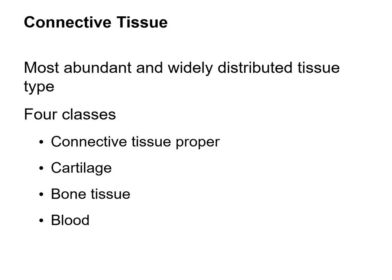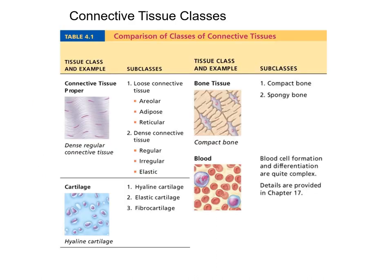There are four major types of tissues and we're done with epithelial tissue. The next two videos will be on connective tissue, which is the most abundant and widely distributed type. There are four classes of connective tissue: connective tissue proper, cartilage, bone, and blood. Some of these classes have subclasses. In this table we organize all types of connective tissue — this is a good table to know which connective tissue falls under what subclass and which class.